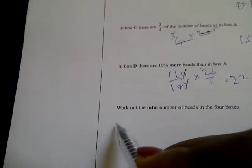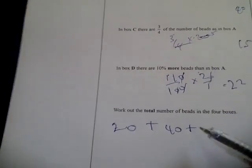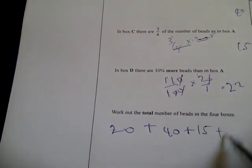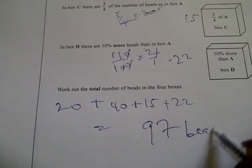Work out the total number of beads in the four boxes. That'll be 20 plus 40 plus 15 plus 22, which is 97. So the total number is equal to 97 beads.